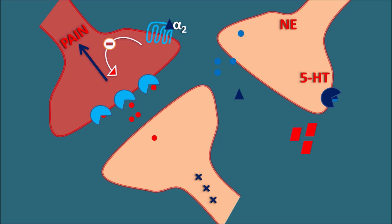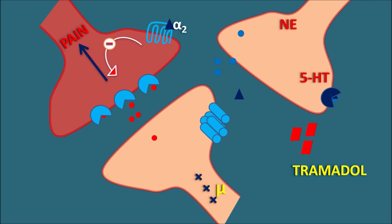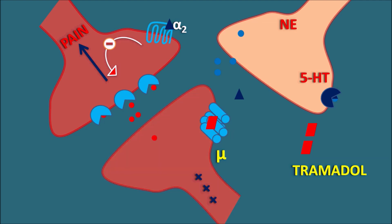Tramadol can act on norepinephrine neurons equipped with mu receptors. Tramadol acts as an agonist at mu receptors, producing inhibitory action on those neurons so pain transmission is directly inhibited. Tramadol can also inhibit the reuptake of norepinephrine and 5-HT. When reuptake is inhibited, the levels of these mediators increase, producing an inhibitory effect on nociception. In this way tramadol produces direct inhibition of nociception as well as indirect inhibition through elevation of norepinephrine and 5-HT levels.